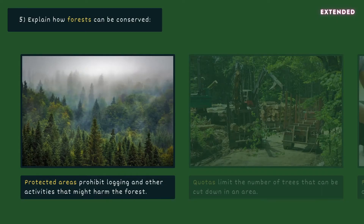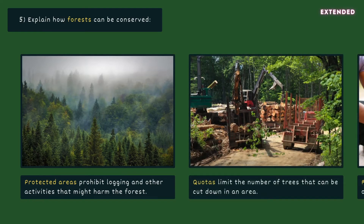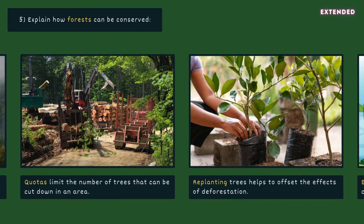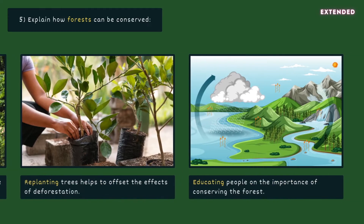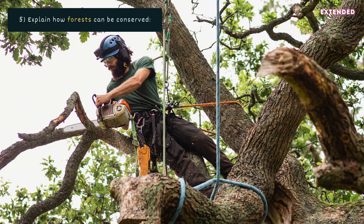Forests can be conserved by establishing protected areas where logging and other commercial activities are prohibited. Introducing quotas which limit the number of trees that can be cut down in a given area, and the logging companies permitted to do so. Replanting trees to accelerate the regeneration of the forest and offset the impact of logging. And educating local populations about the importance of conserving the forest and teaching them ways to sustainably extract and manage resources — for example, felling trees in a way that doesn't damage the surrounding habitat.